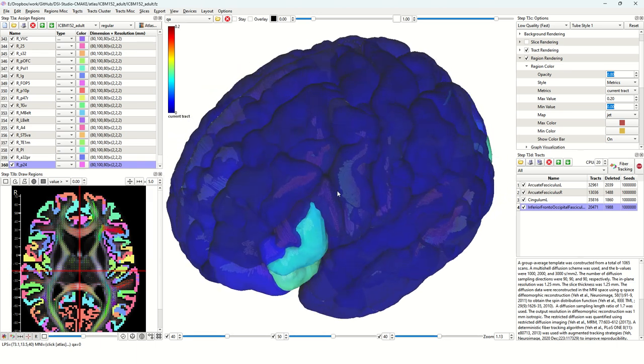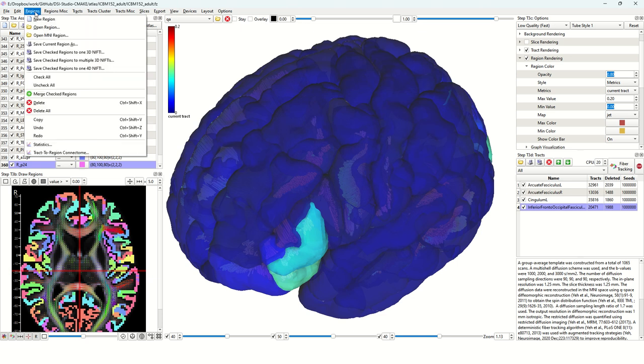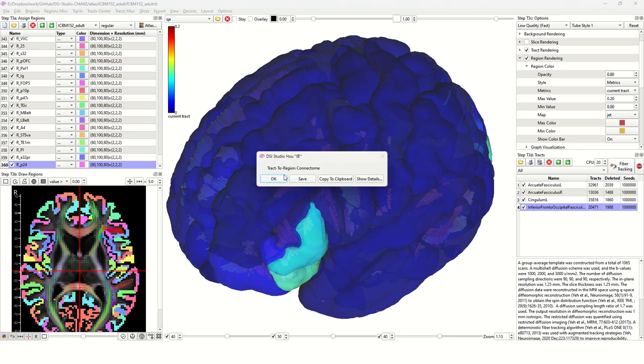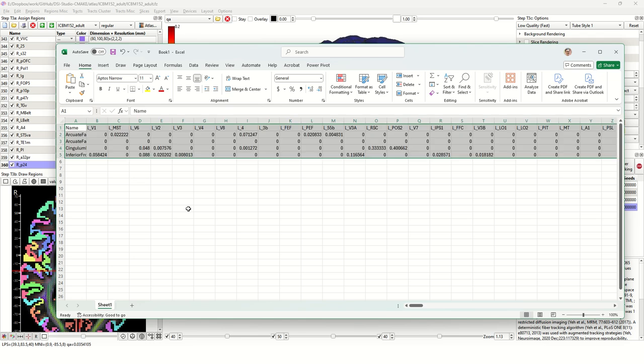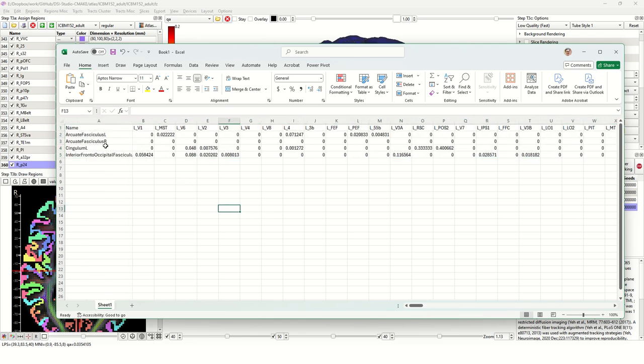In addition to visualization, if you want to get the exact values, the function will be under region. There will be a new item called tract-to-region connectome. Once you have a list of regions on the left and a list of tracks on the right, you can use this function. Once you get it, you can copy the result to a clipboard. Usually I would paste the result into an Excel sheet. You can see it will be an N by M matrix. The rows will be each of the tracks and the columns will be each of the regions, presenting the values.